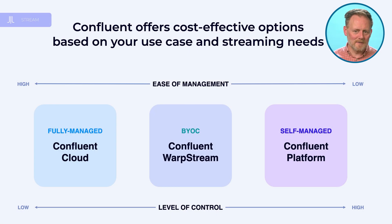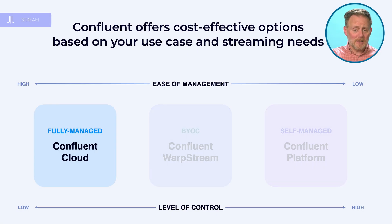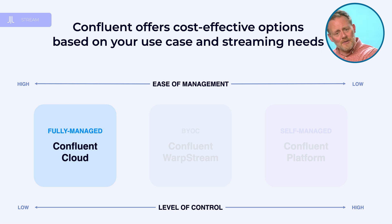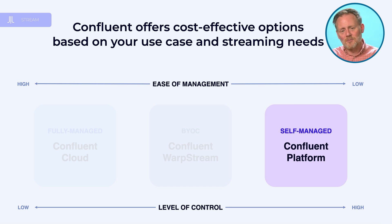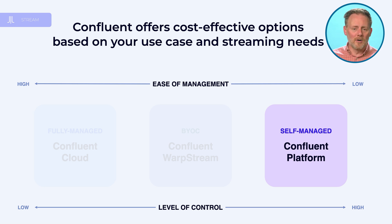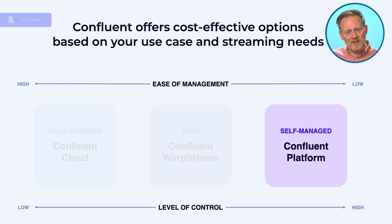Very broadly, the spectrum of Confluent's Kafka offerings goes from Confluent Cloud — that's a fully managed cloud service — on one end. On the other end of the spectrum, you've got Confluent Platform, which is a Confluent product for you to manage on your own infrastructure, whether it's physical machines on premises or instances in the cloud. If you need to run that yourself, that's Confluent Platform.